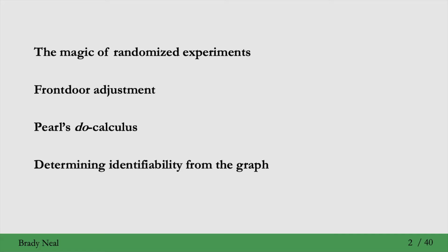Here is the outline of this lecture. Before we get to more general identification, we're going to revisit randomized experiments and explain why they're so magical. Why randomized experiments make causal inference easy.